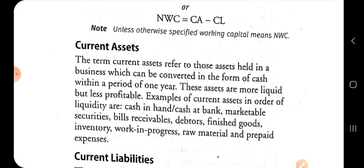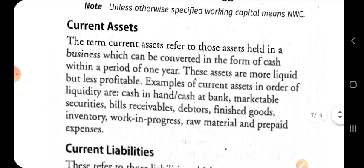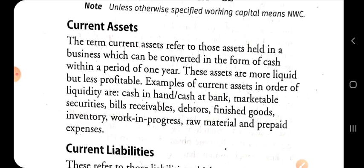Current assets refers to those assets held in a business which can be converted into the form of cash within a period of one year. These assets are more liquid but less profitable. Examples of current assets in order of liquidity include: cash in hand, cash in bank, marketable securities, bills receivable, debtors, finished goods, inventories, work in progress, raw materials, and prepaid expenses. Current liabilities are those liabilities which are to be paid off within one year and are to be paid out of current assets. Current liabilities consist of creditors, bills payable, bank overdraft, and outstanding expenses.